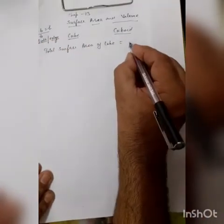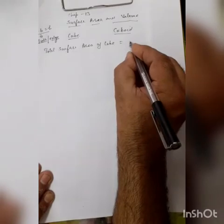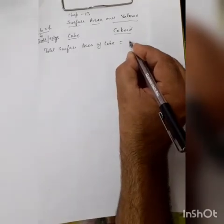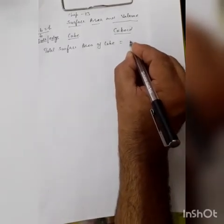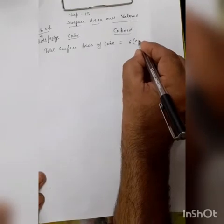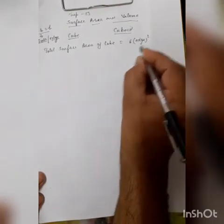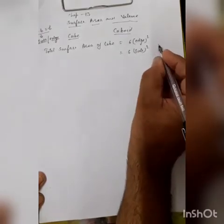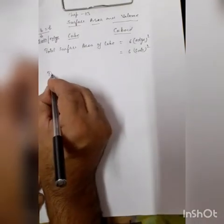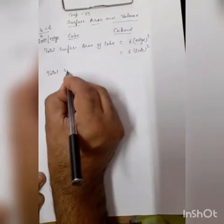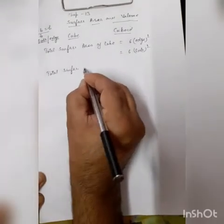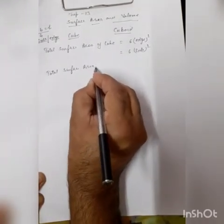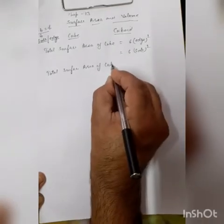We can say that the common dimension of a cube is its side or edge.